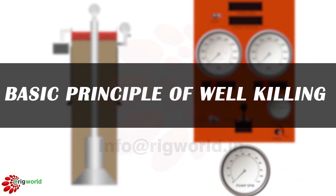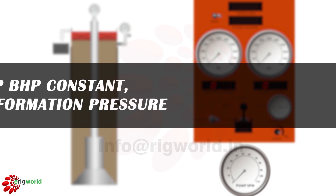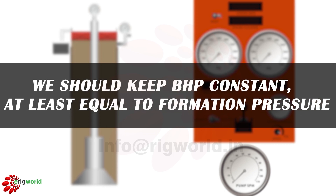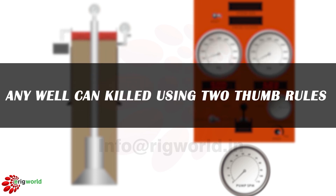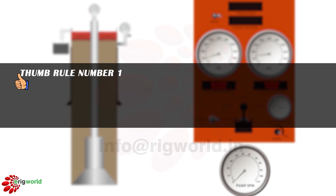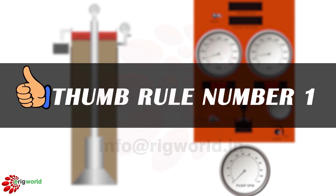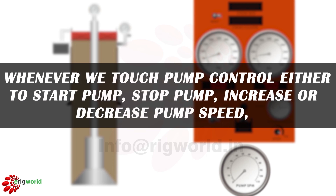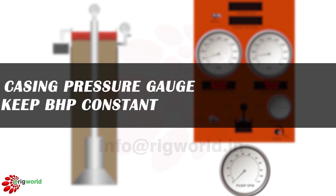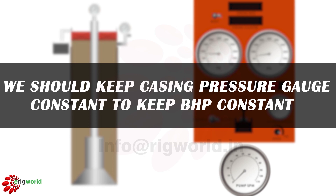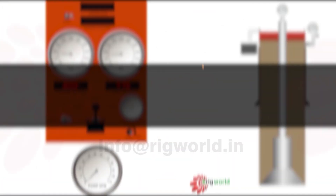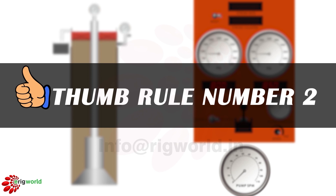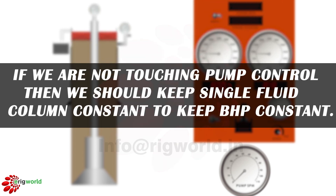Basic principle of well killing: we should keep BHP constant, at least equal to formation pressure. Any well can be killed using two thumb rules. Thumb rule number one: whenever we touch the pump control — to start, stop, increase, or decrease pump speed — we should keep the casing pressure gauge constant to keep BHP constant. Thumb rule number two: if we are not touching the pump control, we should keep the single fluid column constant to keep BHP constant.